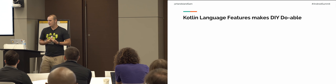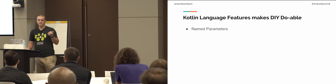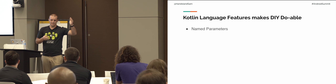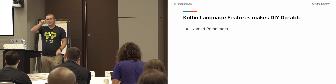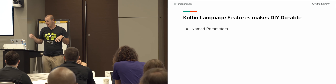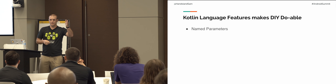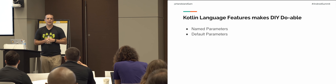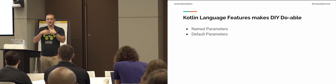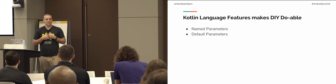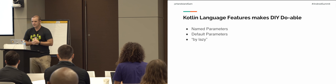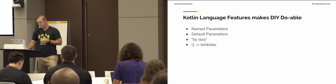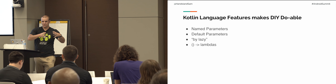The language features that will allow you to make this do-it-yourself method actually doable are: named parameters — think of the example in the keynote this morning where you had four integer parameters like top, bottom, left, right, and in Java it would look like 0, 0, 10, 9, which doesn't make any sense, but in Kotlin you can use named parameters. Default parameters are key — when I define a class, if they don't specify a parameter, I have a default they can use. By lazy, which allows you to have a variable that doesn't get initialized until you access it, and once you access it, that value is cached. And lambdas, which are nice ways to have a function that you can pass around and execute.